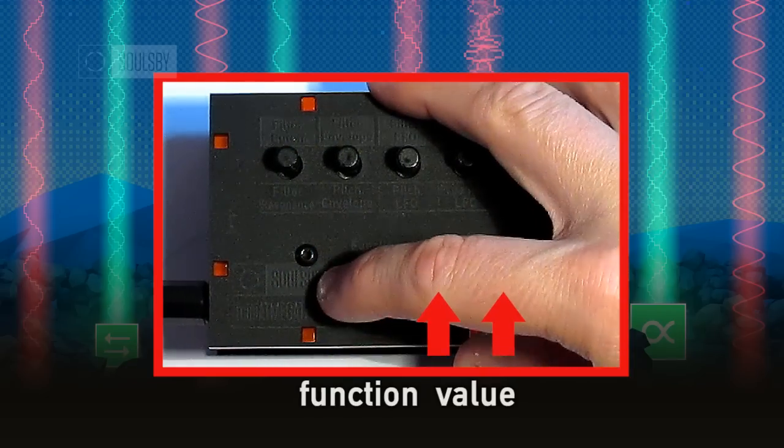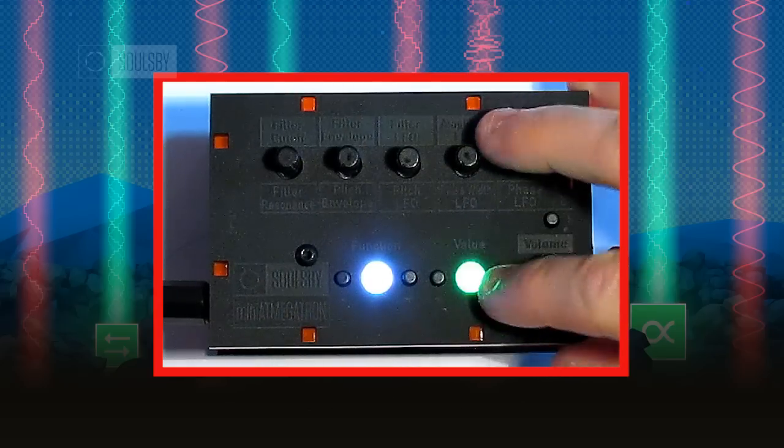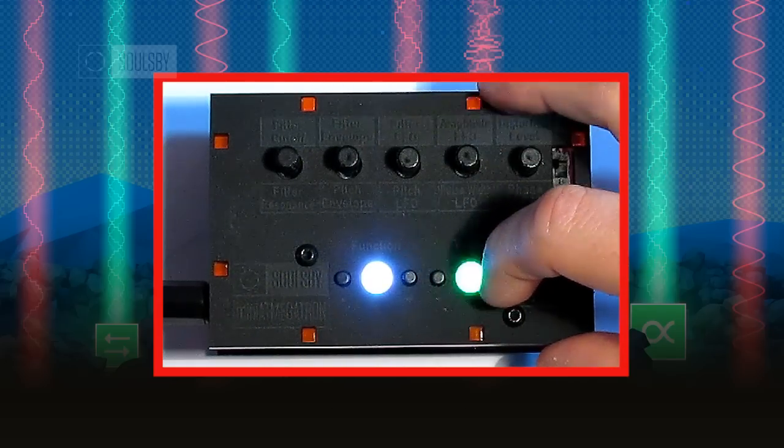The left LED shows the function and the right LED shows the value of the function. The more flashes, the higher the value. For instance, when the function LED is white, we can change the pattern of the internal pattern generator.